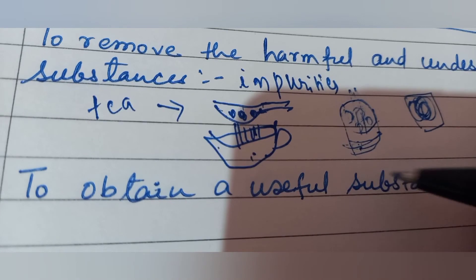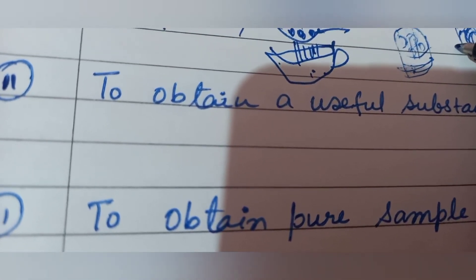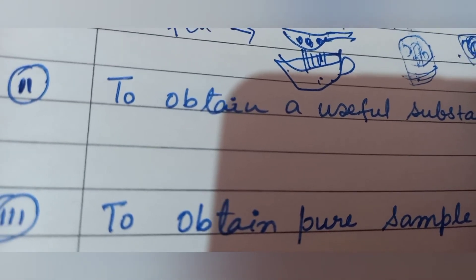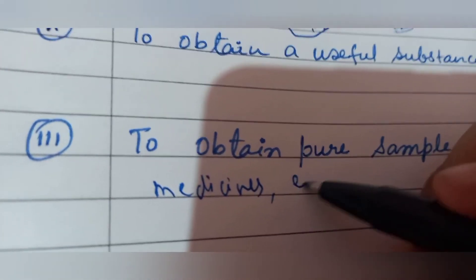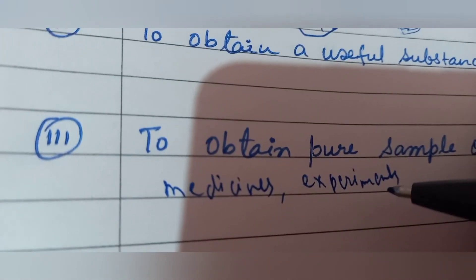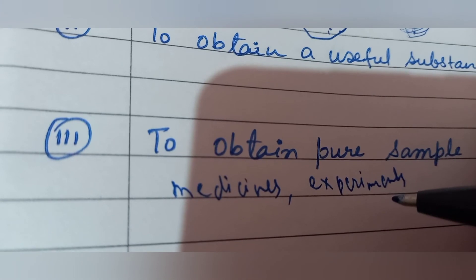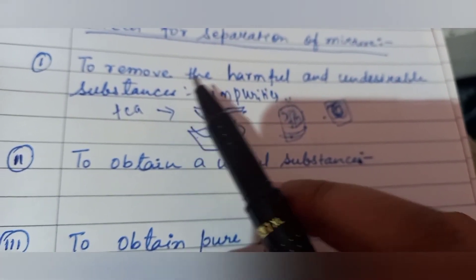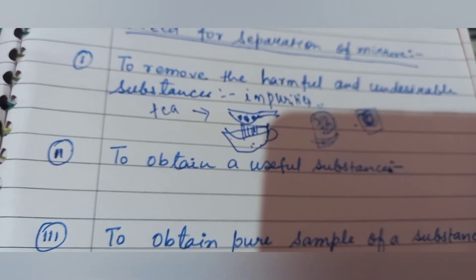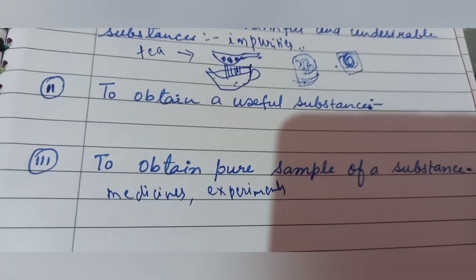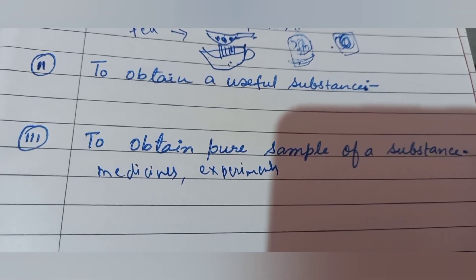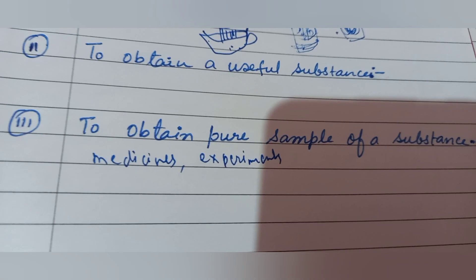The second point: to obtain a useful substance, we also need to separate the mixture. Third, when there is a need for obtaining pure samples — for example, when we make medicines or when we do experiments in laboratories, we need pure substances. So there is a need to remove the impurities. These are the three reasons to separate the mixture: to remove harmful and undesirable substances, to obtain a useful substance, and to obtain a pure sample. Now let us see the principle of separation.